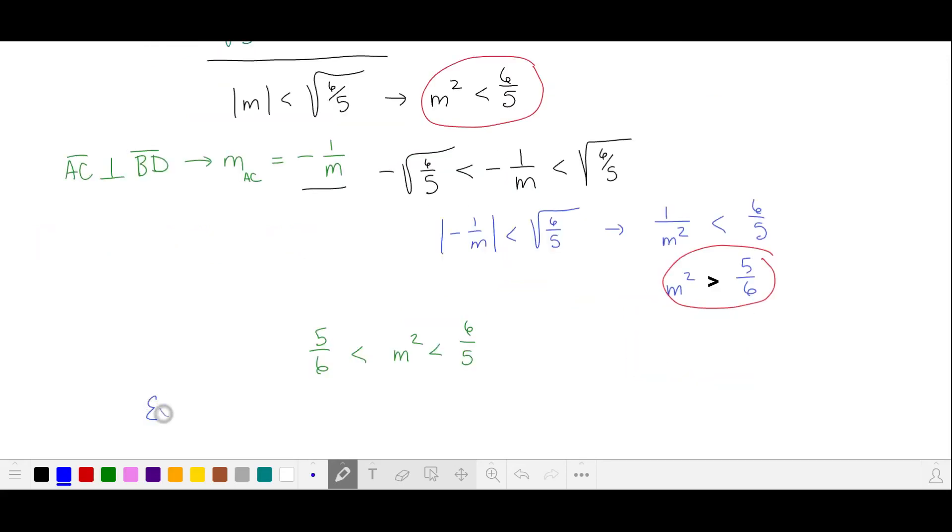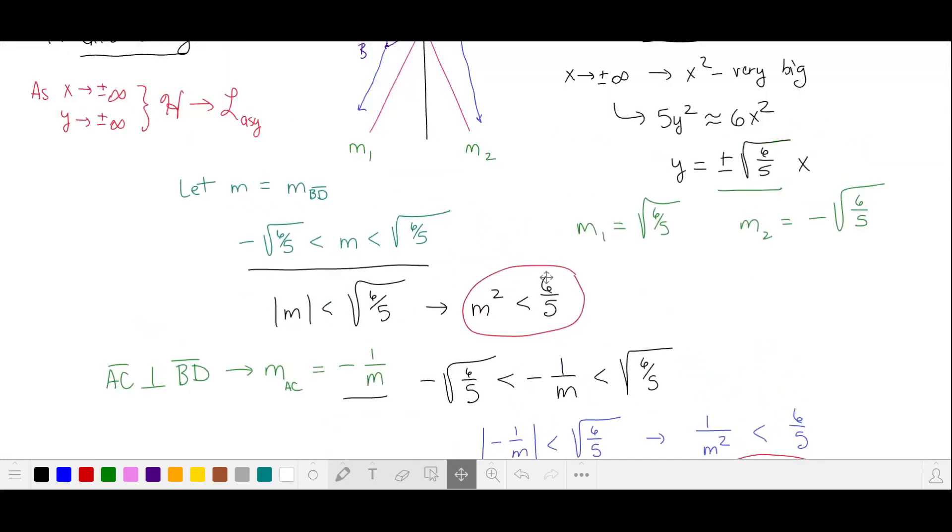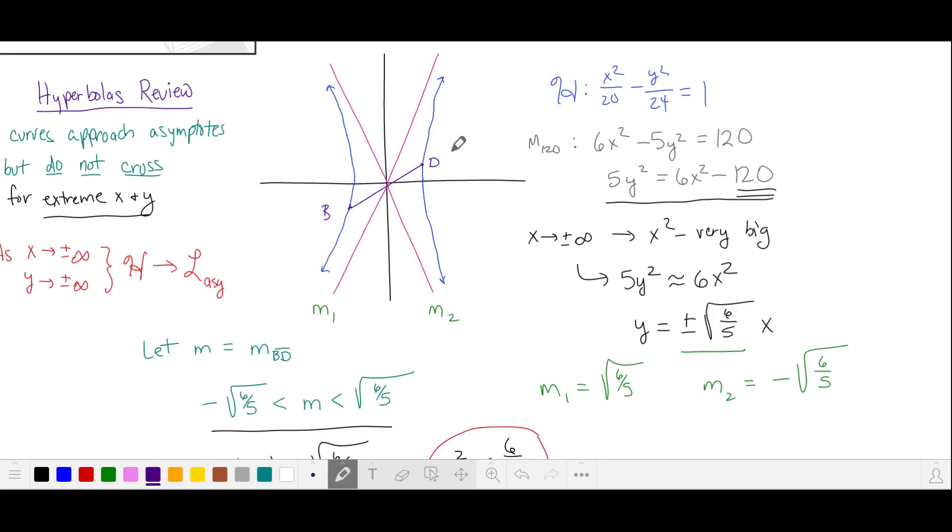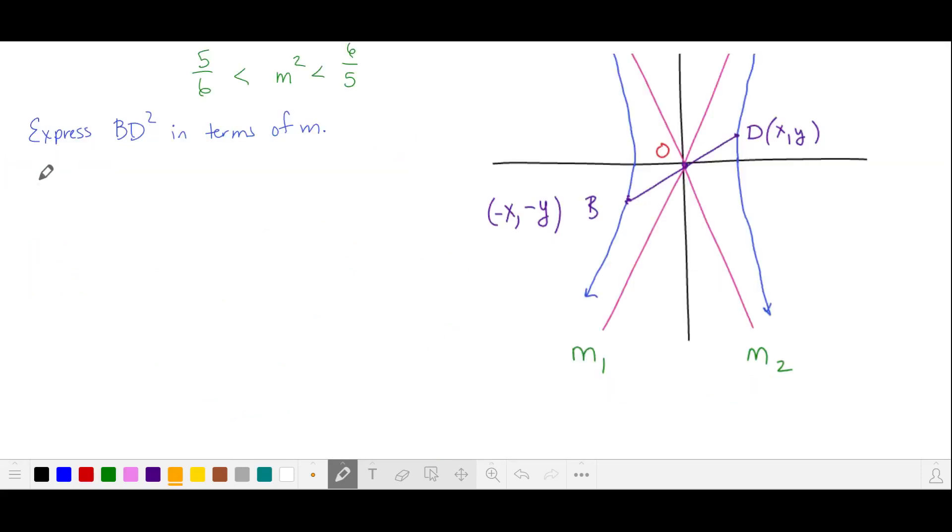Let's see if we can express BD² in terms of m. Returning to our diagram, by the symmetry of the rhombus and the hyperbola, if our point D has coordinates x and y, then point B has coordinates negative x and negative y. And we'll label the origin O. And we also have that our points B and D are on our line that passes through BD, and they're on the hyperbola.